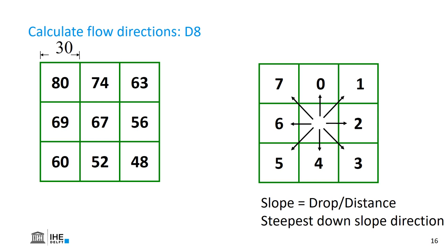We know that we can calculate the slope by evaluating the surrounding pixels of the center pixel, by calculating the delta z over delta x — the drop divided by the distance. For the D8 algorithm, we assign the direction of the steepest slope. You need to look at the elevation values and select one of the direction values displayed on the right side of this slide.